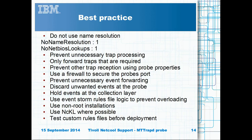Most customers will want to use a single or peer-to-peer pair of MT-TRAP-D probes. If this is the case, ensure that a single probe is capable of processing the expected peak trap volume and use the performance tuning settings. It is best to prevent unwanted data early in the event processing, ideally using a firewall, otherwise by using discard logic and flood rules processing. Where possible use a non-root probe installation that uses a high probe port rather than a default port, and use the NetCore knowledge library for rules file processing. Always test the probe's processing before deploying it in a production environment.